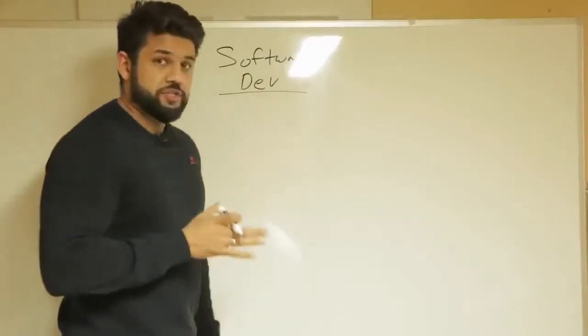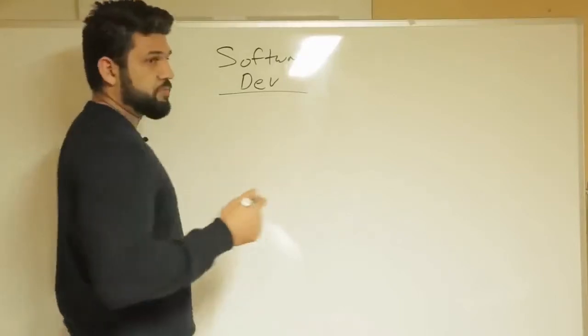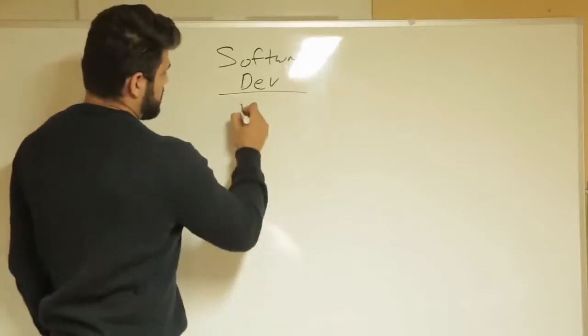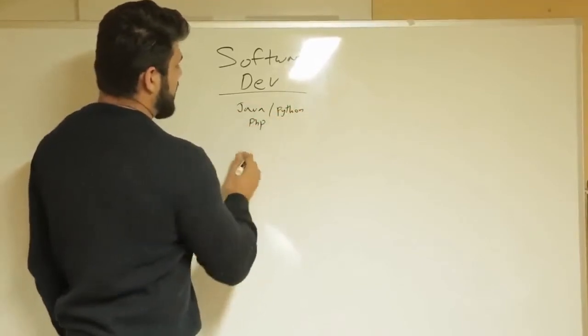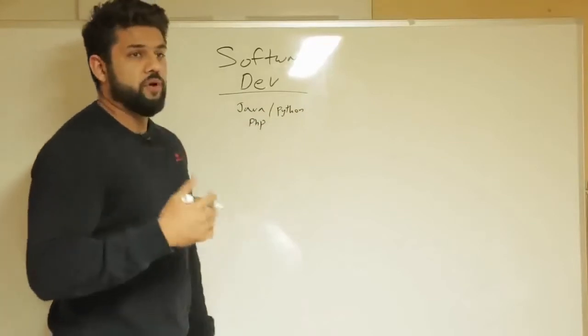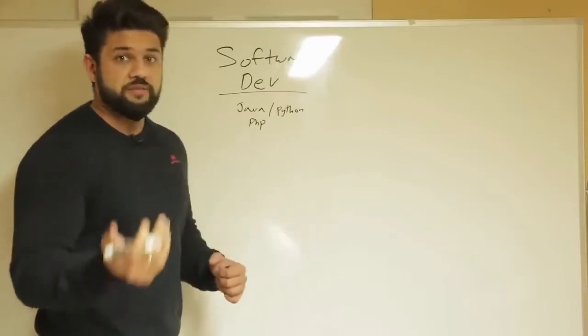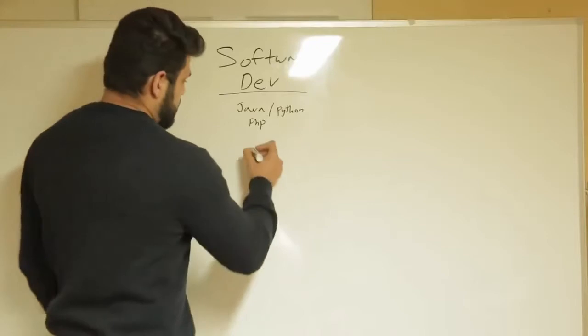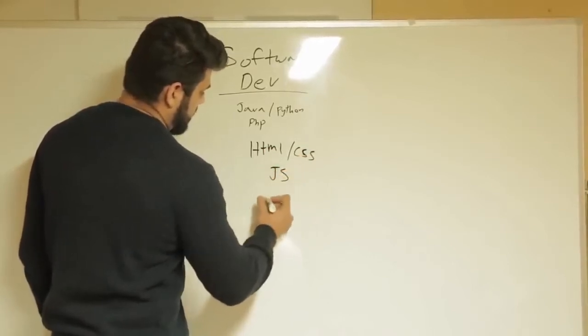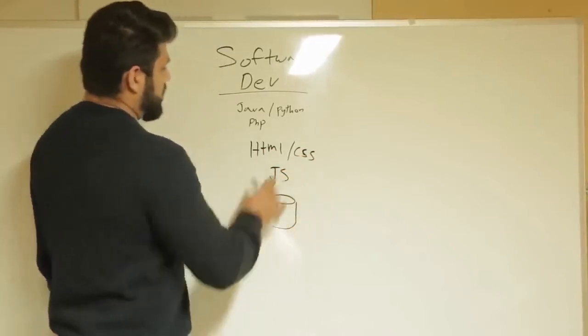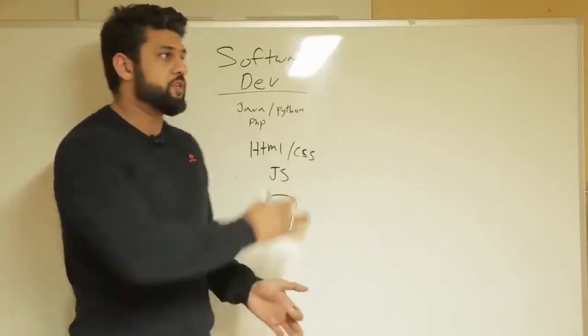But the software dev track, in my opinion, is a challenging track for someone that does not have a computer science degree because it requires you to know a couple of different programming languages, maybe one or two. The most popular ones are Java and Python. Another very popular one is PHP. And then a candidate would also need to have some understanding of the overall landscape of technology, understand front-end, understand back-end. So they would need to know a little bit of HTML, CSS, and some JavaScript, and maybe a little bit of databases. I'm just going to draw a database here. All right, so the breadth of knowledge for this path is pretty wide. You'd need to know a lot of things.